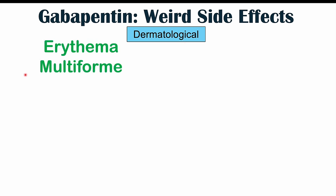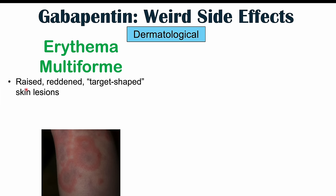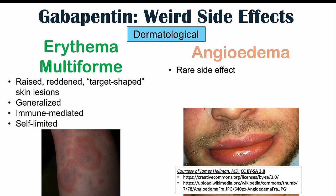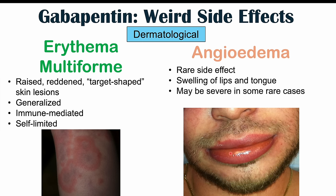On the dermatological side, we may see erythema multiforme — raised, reddened, target-shaped or targetoid skin lesions that are generalized and can be found anywhere on the body. They are immune-mediated, caused by an immune system reaction to gabapentin, and are self-limited. We may also see angioedema, a rare side effect involving swelling of the lips and tongue, which in severe cases can affect the throat and make breathing difficult.